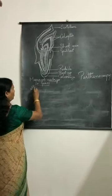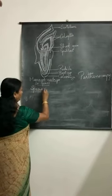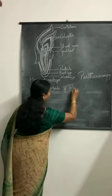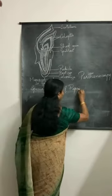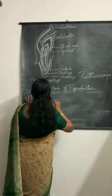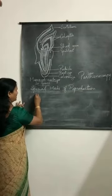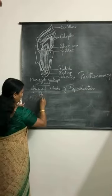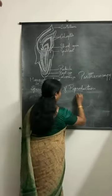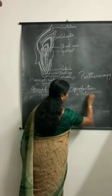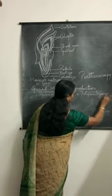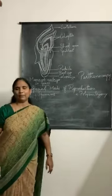Special modes of reproduction. Under this, we have to learn two concepts. The first one is apomixis and the second one is polyembryony.